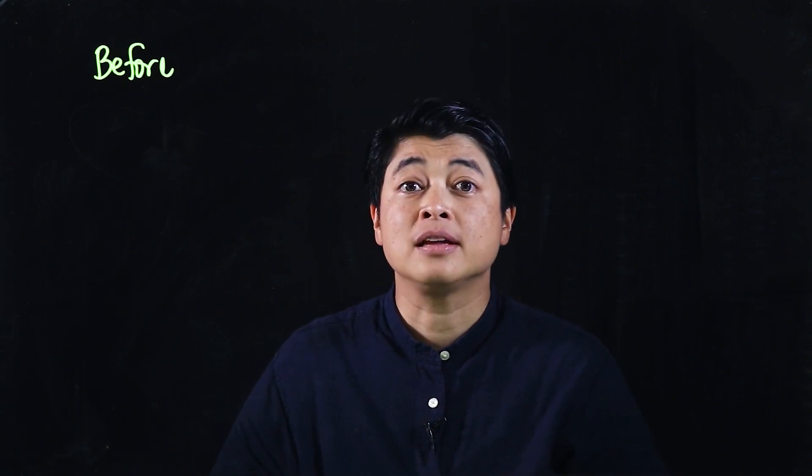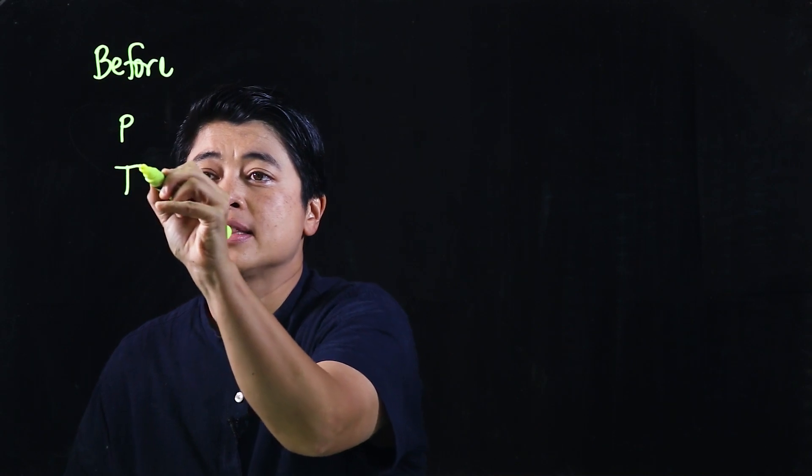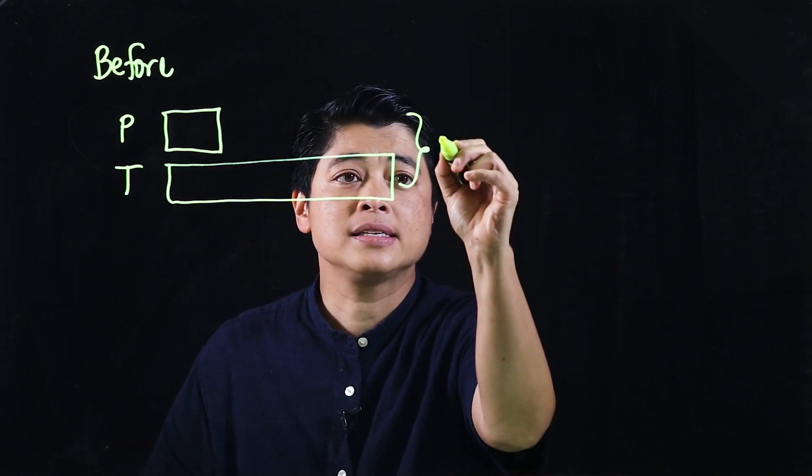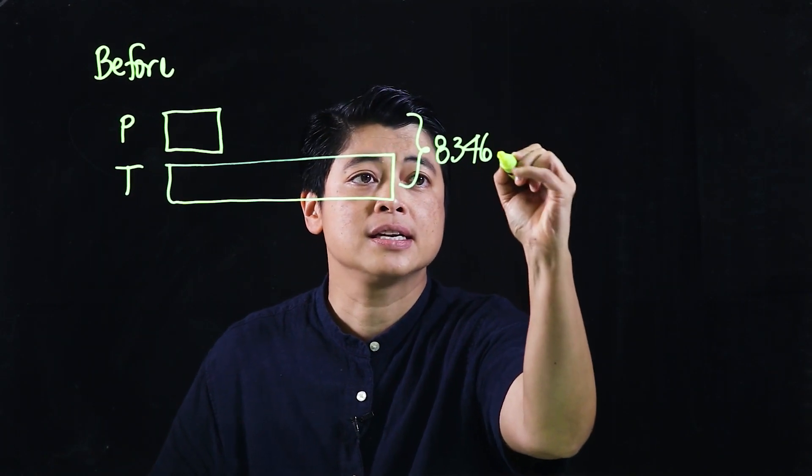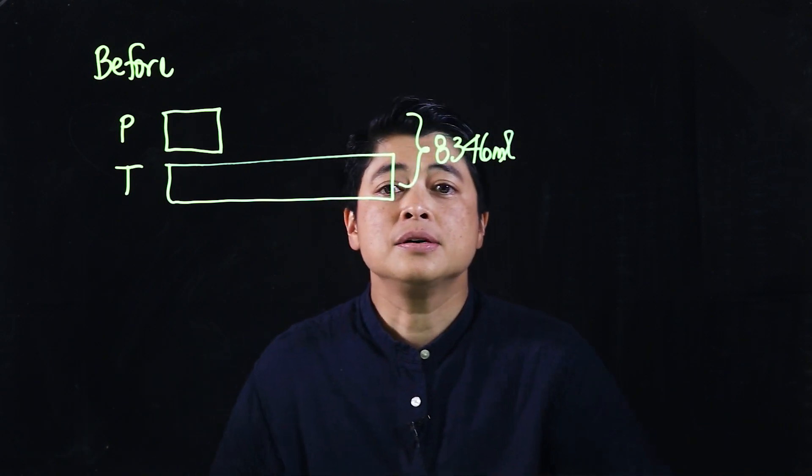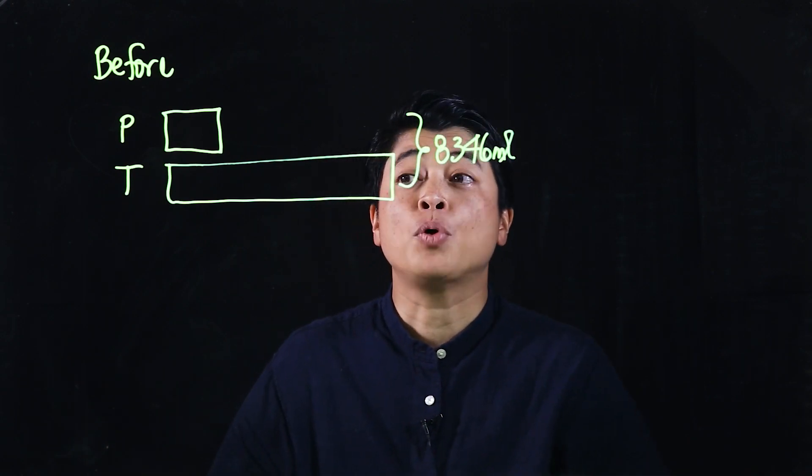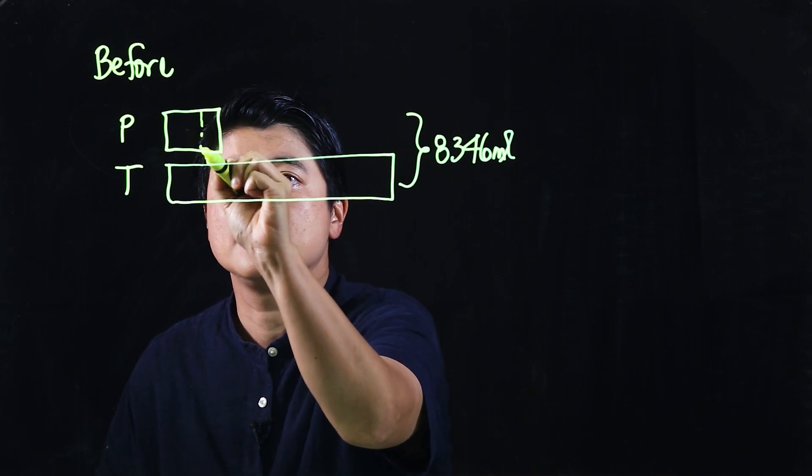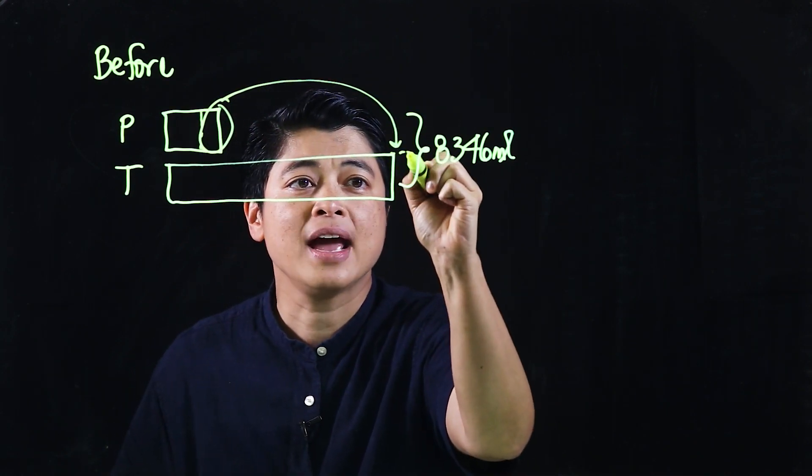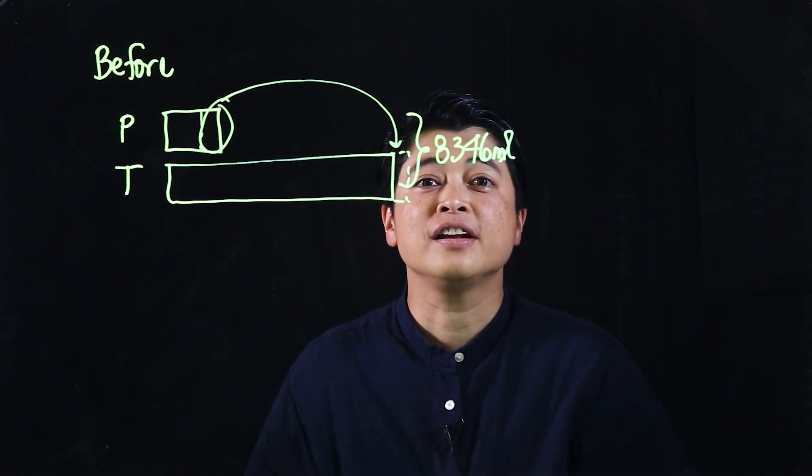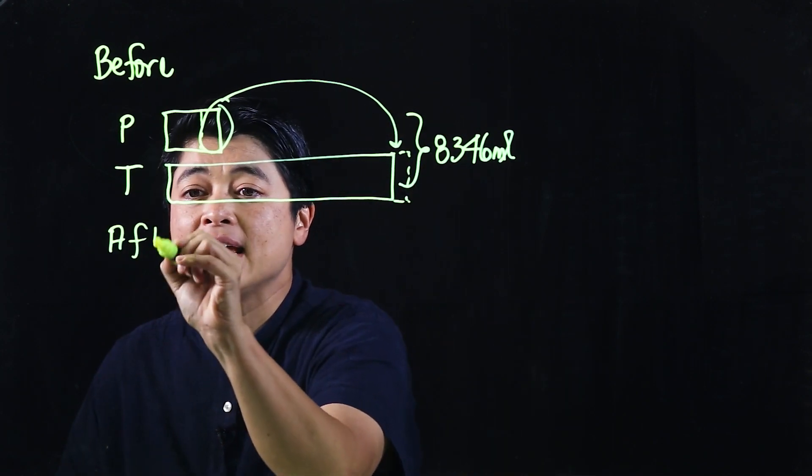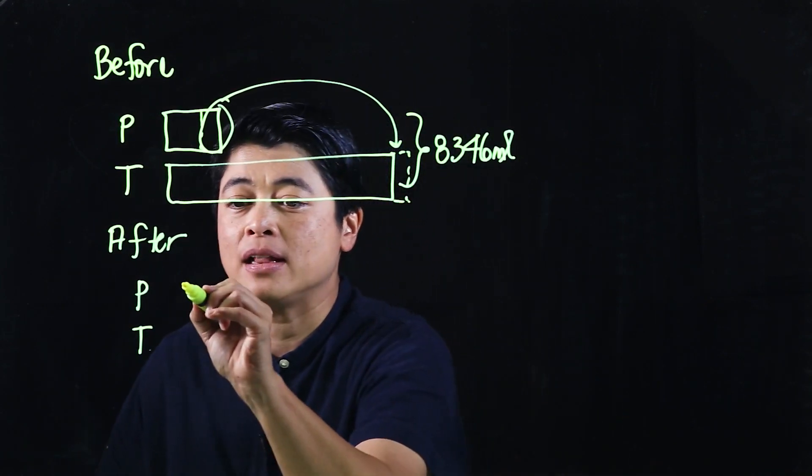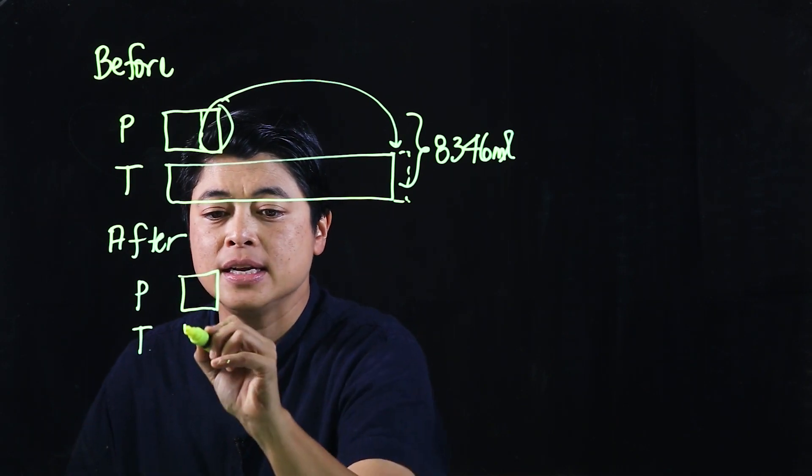They gave a drawing, but we need to make sure that we understand the drawing. So before, there's the pail and there's the tank, and together that's 8,346 milliliters. What happens is we're going to take a portion of this pail and transfer it over to the tank. When we take a portion and transfer to the tank, we still have 8,346.